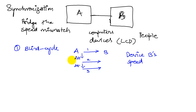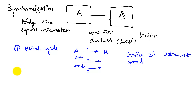Blind synchronization is a useful protocol because there are a lot of devices that are not sophisticated, and it will always work if you know from the data sheet of device B what its specifications are. So let's look at another alternative that's slightly better — the second one, which we call busy wait.